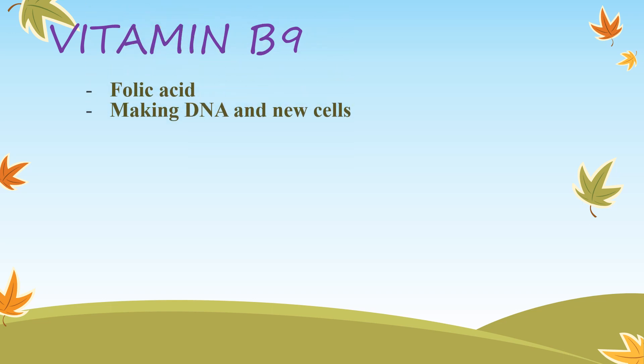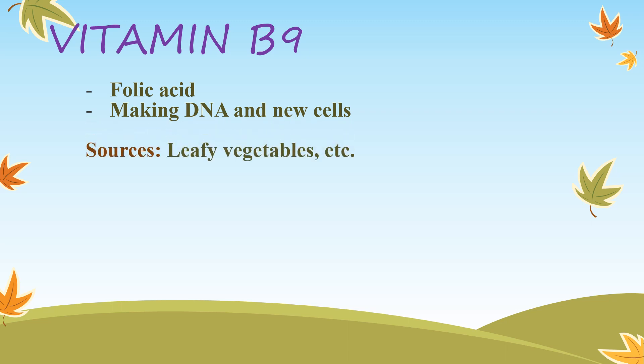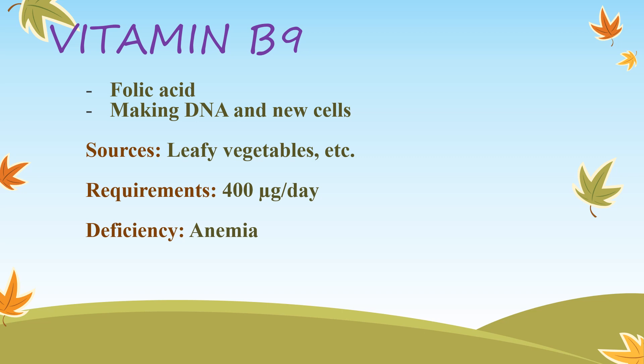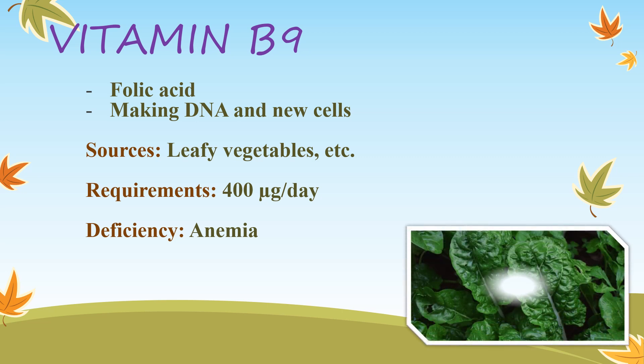Vitamin B9 — folic acid. It is part of an enzyme needed for making DNA and new cells, especially red blood cells. Sources: leafy vegetables, bread, cereals, liver, etc. Recommended daily allowance: 400 micrograms per day. Deficiency leads to megaloblastic anemia, and deficiency during pregnancy is associated with birth defects such as neural tube defects. Overdose can mask symptoms of vitamin B12 deficiency and cause other effects.